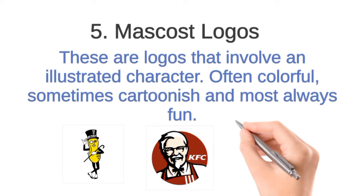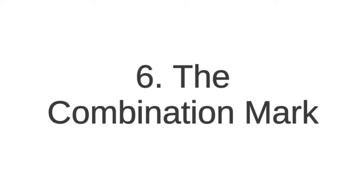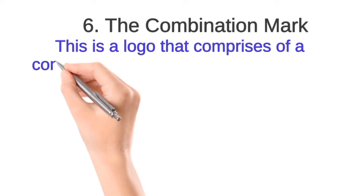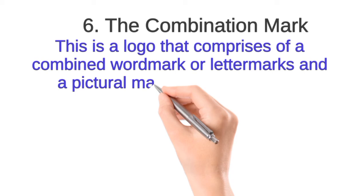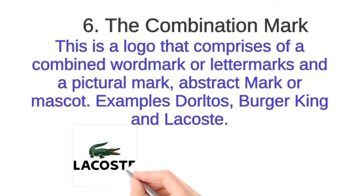Number six, we have the combination mark logos. These are logos that combine a word mark or letter mark with a pictorial mark, abstract mark, or mascot. Examples include Doritos, Burger King, and Lacoste. They contain a word mark together with an image or pictorial form.